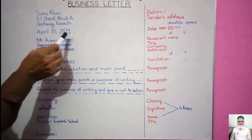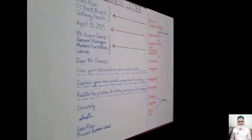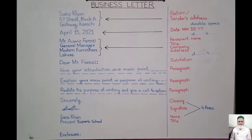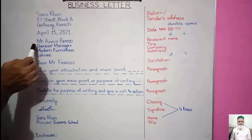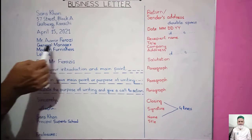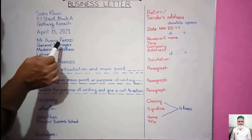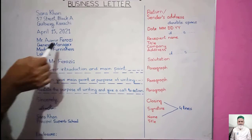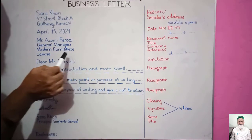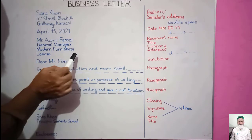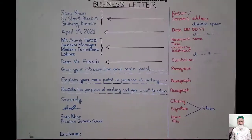After double spacing, we write the recipient's name, his or her title, company name, and address. After the recipient section, we again give a double space — leaving one line — and then the salutation follows.